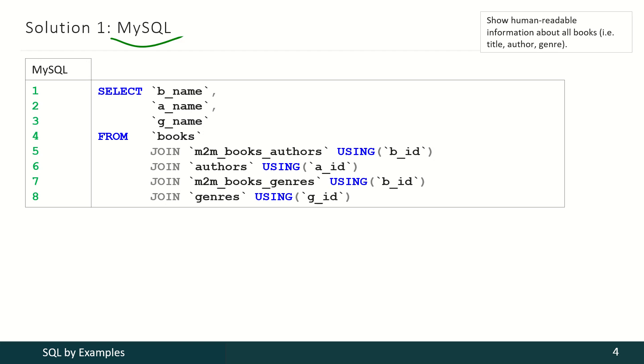In MySQL, we shall select book title, author name, and genre name. We shall use the following tables: for books, for authors, for genres, and these two intermediate tables storing the connections between books and authors, and books and genres. In MySQL, when joined tables have fields with the same name, we may use such a simplified syntax with a keyword USING.